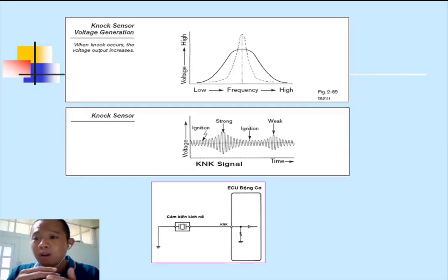When the engine vibration frequency matches the natural resonant frequency of the sensor at 7 kHz, a phenomenon called resonance occurs. When resonance happens, the amplitude of the sensor oscillation becomes maximum, and when amplitude is maximum, the voltage output is maximum at approximately 2.5V.